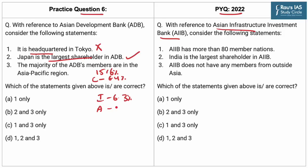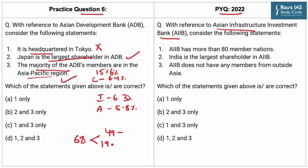Statement 3: The majority of ADB's members are from the Asia-Pacific region. This statement is correct because out of a total of 68 members, 49 are from the Asia-Pacific region, including important members like Japan, India, and China. However, the grouping also has 19 members from outside the region, including the US, United Kingdom, and Canada, among other countries. From the above discussion, we can conclude that Statements 2 and 3 are correct, thus making Option B the right answer.